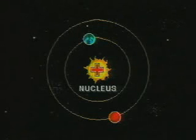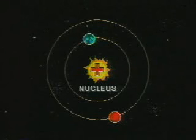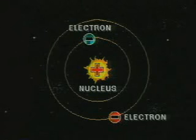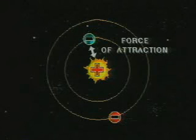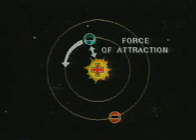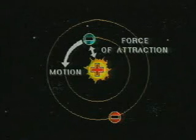He proposed a structure for the atom which mimics, in miniature, the solar system. The tiny, heavy nucleus is orbited by lighter electrons. The force of attraction between the electron and the nucleus prevents the electron from flying off into space, but it is not great enough to cause the moving electron to spiral into the nucleus.